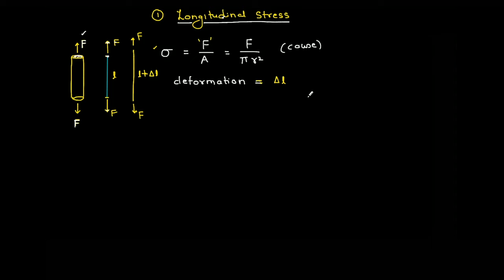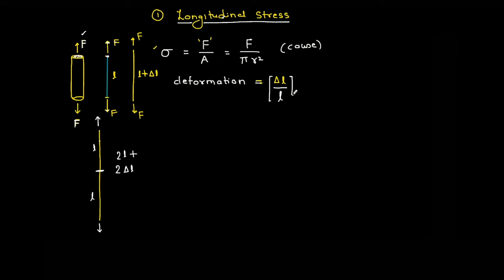If I take double the length of wire with the same cause — same force per unit area — then the deformation will be two times delta L. You can divide the wire into two sections of length L, and each section stretches by delta L: delta L from the upper part and delta L from the lower part. So if deformation is measured as change in length per unit length — delta L divided by L — then it will be a proper, consistent measure. This quantified value of deformation is called strain.